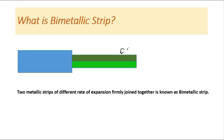This is strip A and the lower one is strip B, and both these metals are different. Their thermal expansion would be different — the coefficient of linear expansion alpha of A would be different from alpha of B. Which is greater and which is smaller depends upon the type of metal. This is generally the construction of a bimetallic strip.